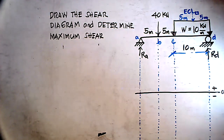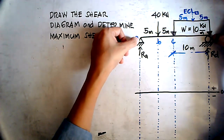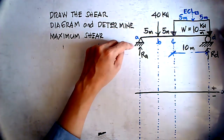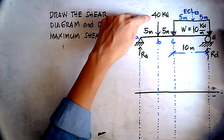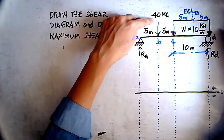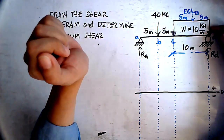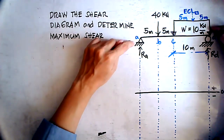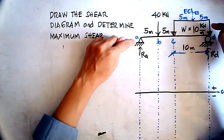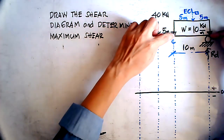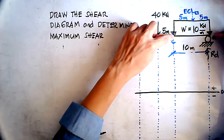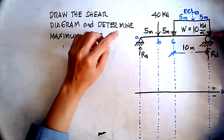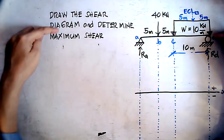We are given another sample beam. The beam is a simply supported beam with points A, B, C, and D. This is a kind of beam where the loads include a concentrated load of 40 kilonewtons and a uniformly distributed load of 10 kilonewtons per meter. The 40 kN concentrated load is applied 5 meters from point A, while the 10 kN/m UDL is applied from point C to point B, which is a span of 10 meters.